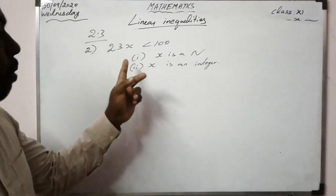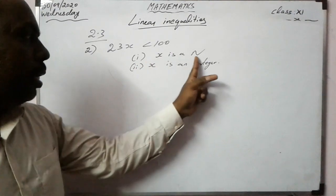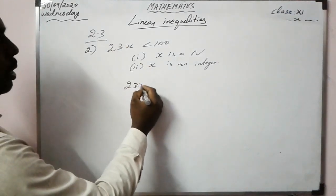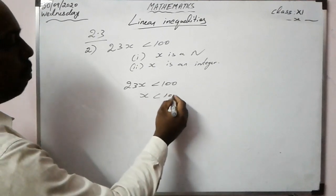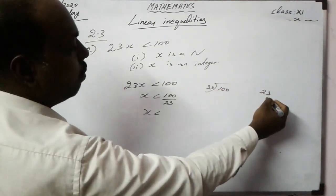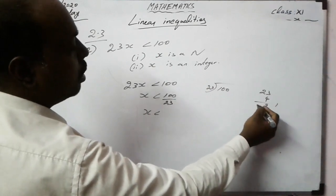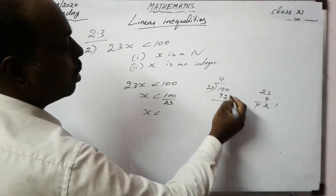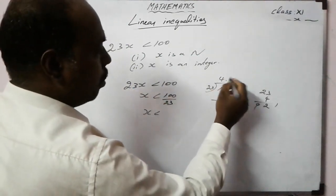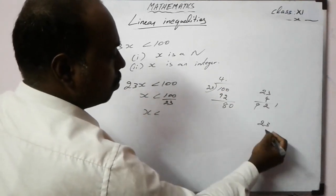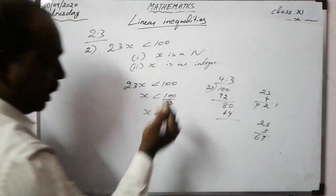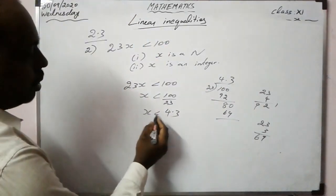We have to find the value of x. From 23x < 100, we get x < 100/23 ≈ 4.3. For the first part, x is a natural number, so natural numbers less than 4.3 are 1, 2, 3, 4.